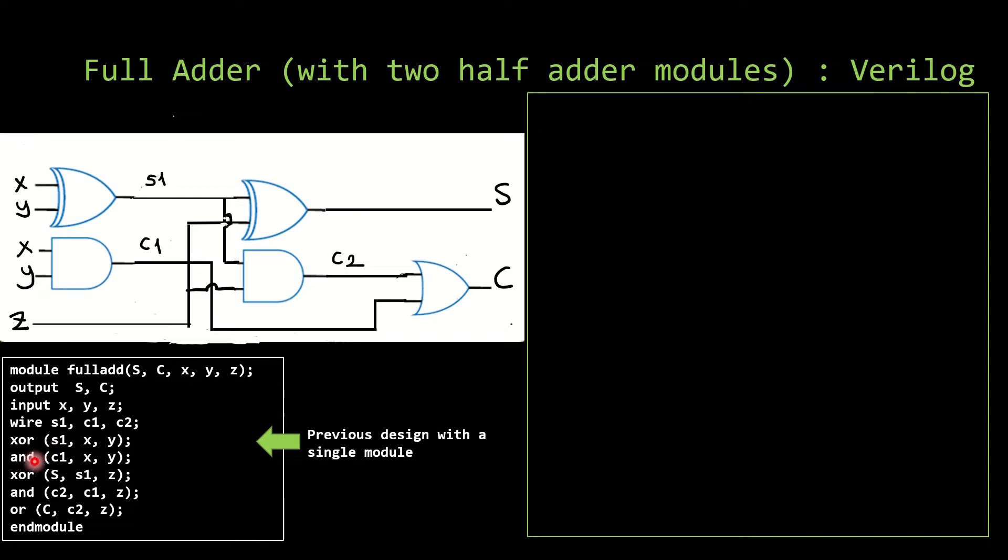You can see that we have XOR and XOR and AND and the final OR right here. Now we will see how to use half-adders as single modules and implement them in our design code.